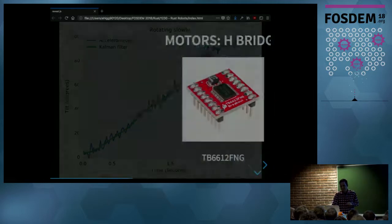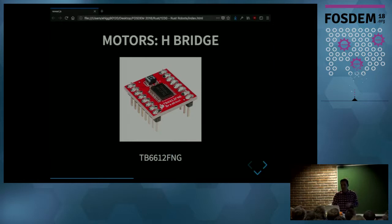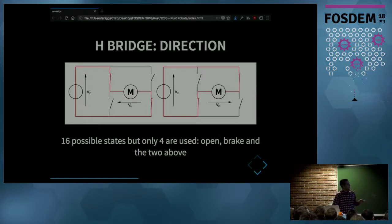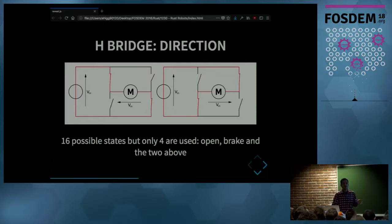Now we have the angle, and we need to control the motors to stabilize the robot. For that we use an H-Bridge. This module has two H-Bridges to control the two motors. The H-Bridge controls the direction of the motor — it's basically four switches. In one state, the power supply is applied to the motor making it move; in the other state, the voltage is applied with reverse polarity making it spin the other direction. In practice we use four states: the two directional states, one where the motor is disconnected, and one where the motor is short-circuited to brake it.